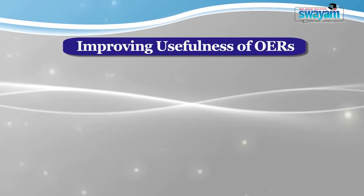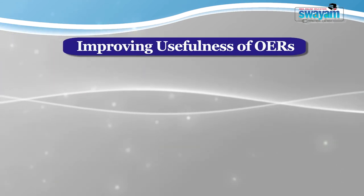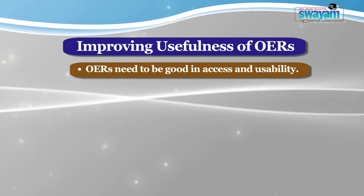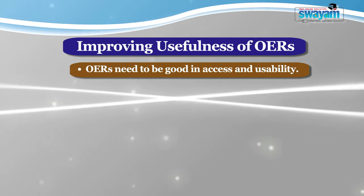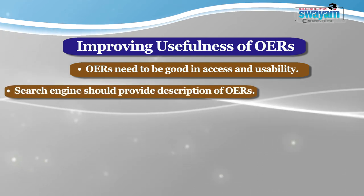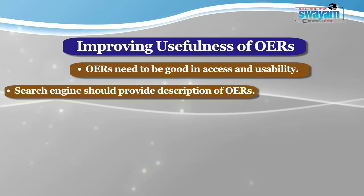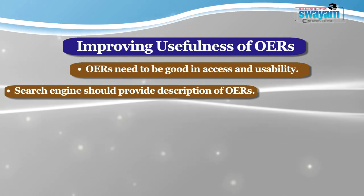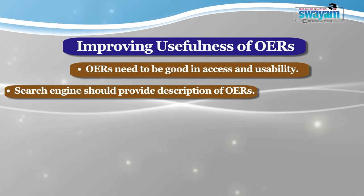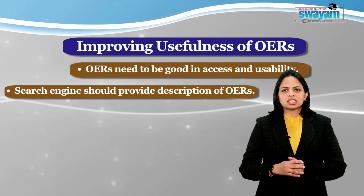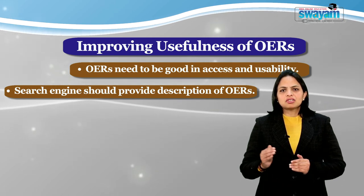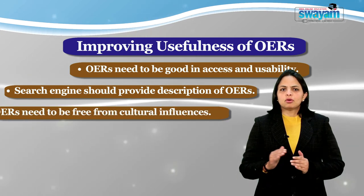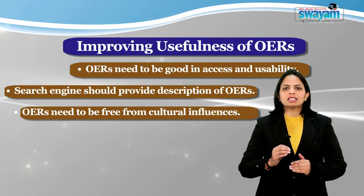We will discuss improving the usefulness of open educational resources. Existing open educational resources should be good in terms of access and usability. The swift increase in the number of open educational resources and online repositories is driving this need. Search engines should provide descriptions about open educational resources, which may also improve the functioning of search engines. There is an imbalance between the availability of open educational resources and the knowledge products of developed countries, as a huge number of OERs are products of developed countries. The elements of language and culture have invariably invaded the content of open educational resources, and most OERs are in English and influenced by Western culture.